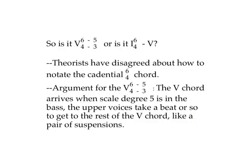So is it a 5 chord with a 6-4 to 5-3 motion over the bass? Or is it a 1-6-4 going to a 5? Theorists have disagreed about how to notate the cadential 6-4 chord. The argument for the 5 with 6-4 going to 5-3: the 5 chord arrives when scale degree 5 is in the bass, and the upper voices take a beat or so to get to the rest of the 5 chord, like a suspension or like accented passing tones.